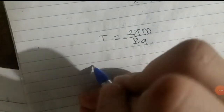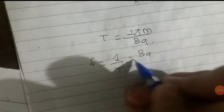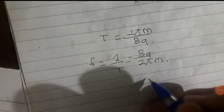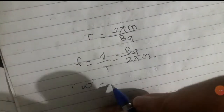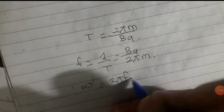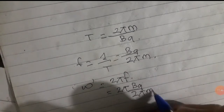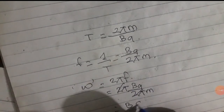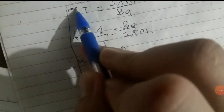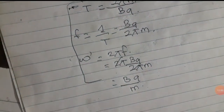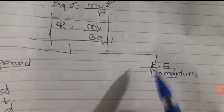You can also find the frequency: f = 1/T = bq/2πm. And the angular frequency omega equals bq/m. Now the next formula involves kinetic energy and momentum.